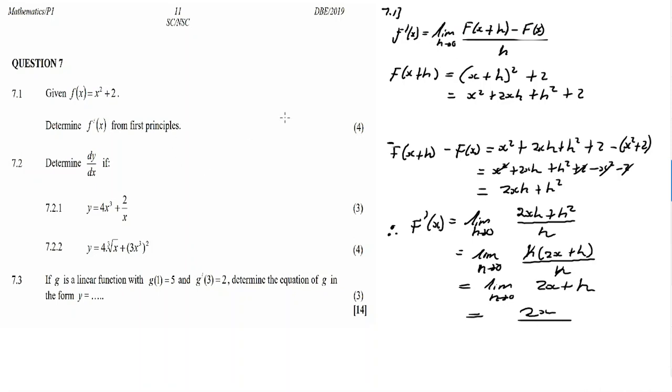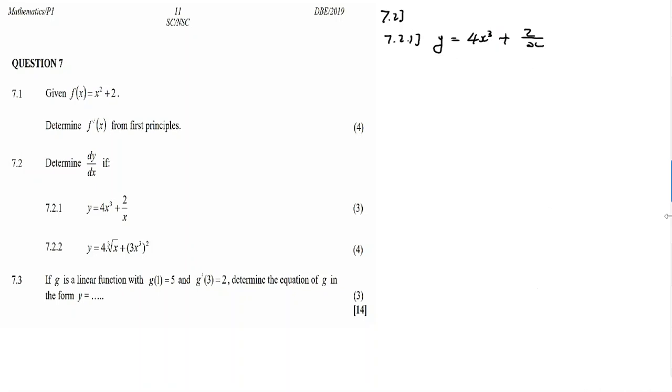Then limit h approaches 0 is 2x plus h, and then where there's h you substitute with zero. So now it's zero. So it's 2x. This is our final answer from finding derivative from first principles. This is how you do it, this is where you grab your marks.